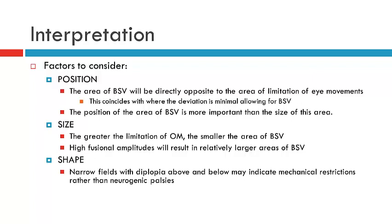You already know that the deviation, if you have a neurogenic palsy, will be greatest in the field of gaze where that particular muscle is acting. Let's take an example of the left inferior rectus — its field of action is in laevo depression. So generally we would expect that the deviation will be greatest in laevo depression, meaning diplopia would be greatest in this position. Theoretically, the deviation would be least in the direct opposite position. So in that patient, we would expect the area of BSV to be in dextro elevation, and if we mapped the field of BSV, we would expect to find it somewhere in the region of dextro elevation.